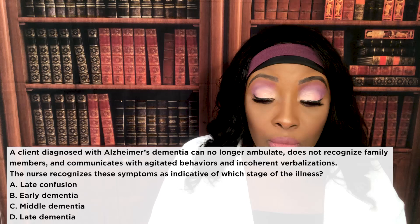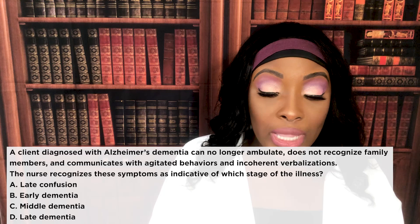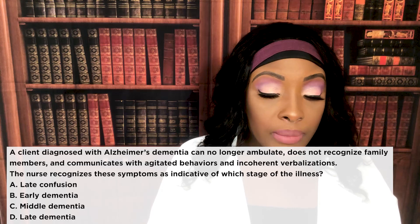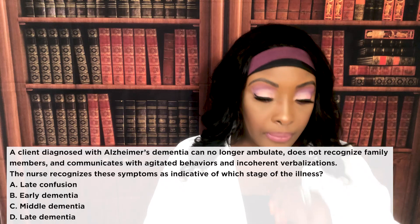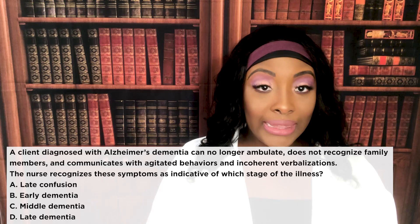A client diagnosed with Alzheimer's dementia can no longer ambulate, does not recognize family members, and communicates with agitated behaviors and incoherent verbalizations. The nurse recognizes these symptoms as indicative of which stage? A: Late confusion. B: Early dementia. C: Middle dementia. D: Late dementia.